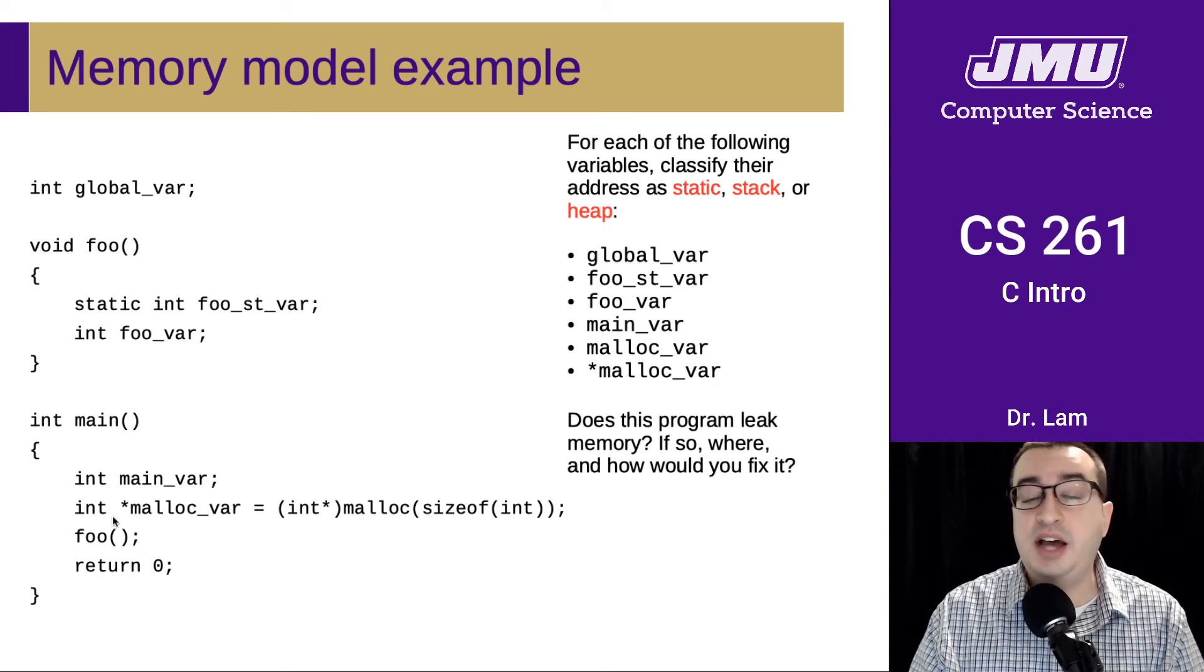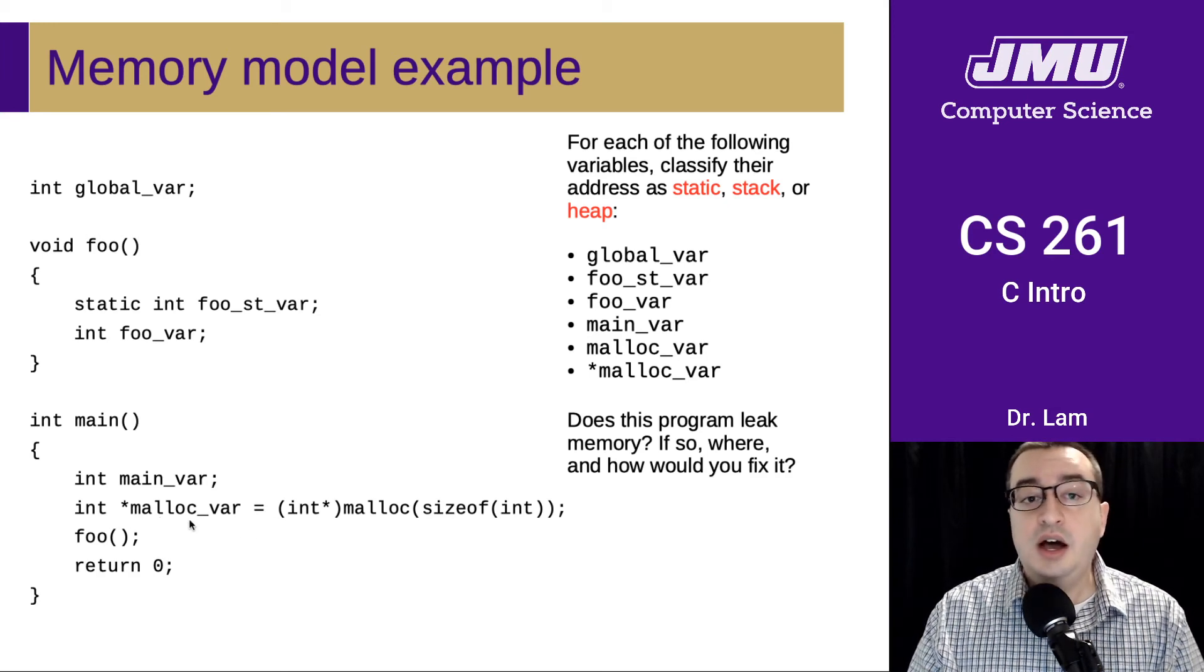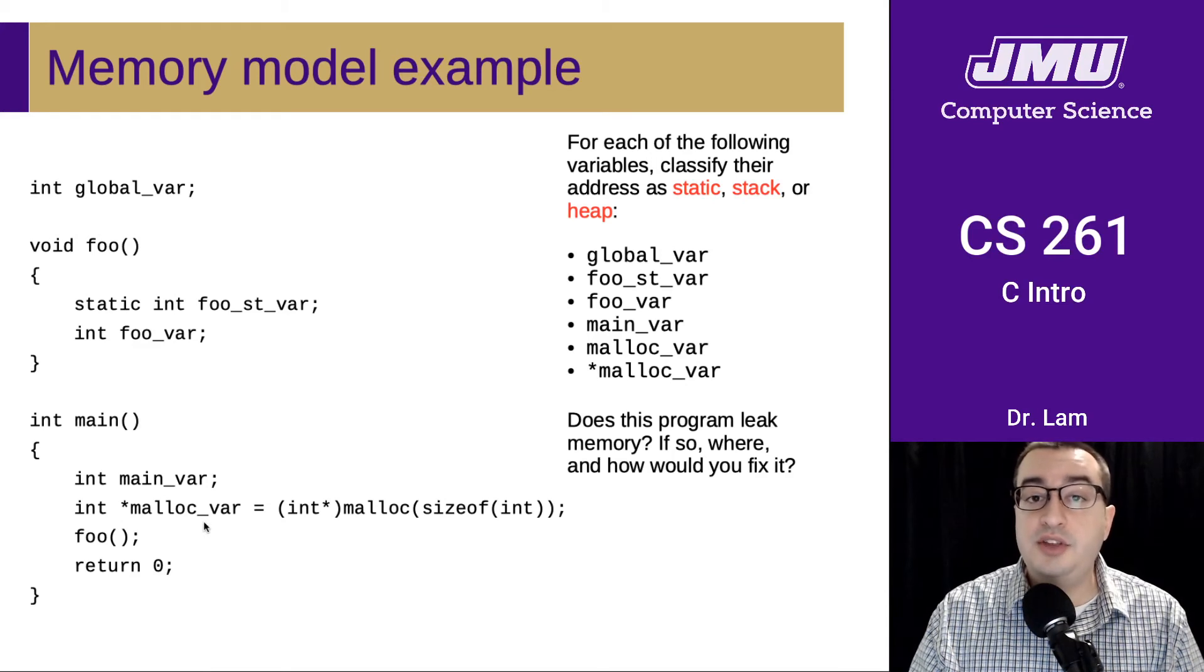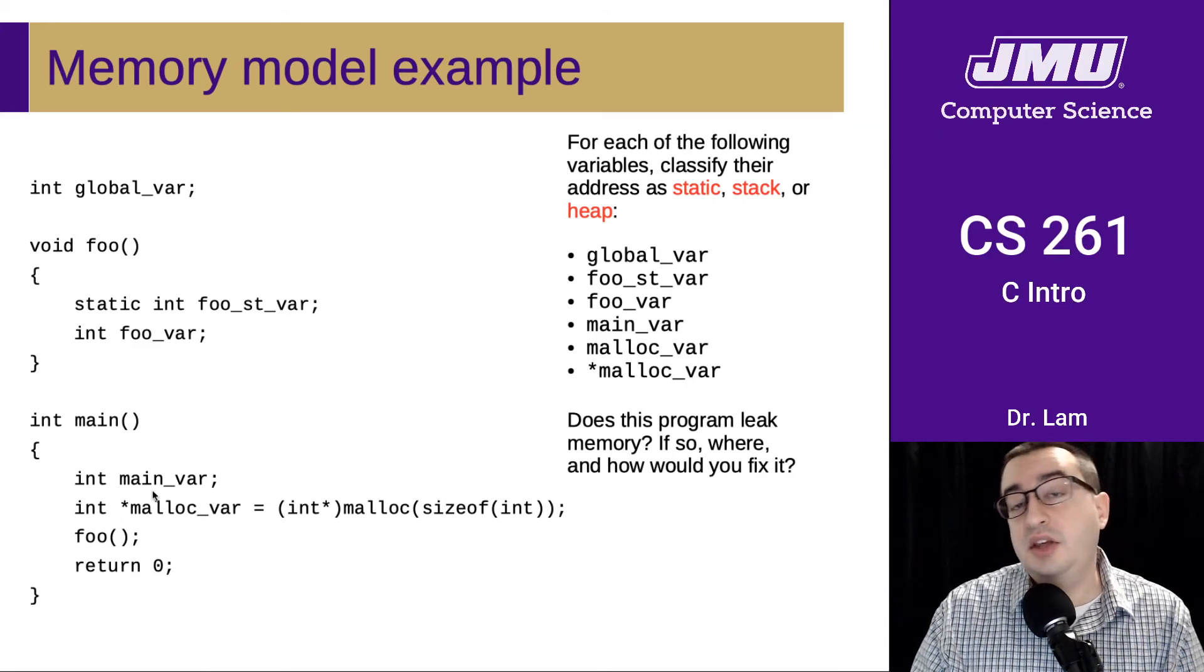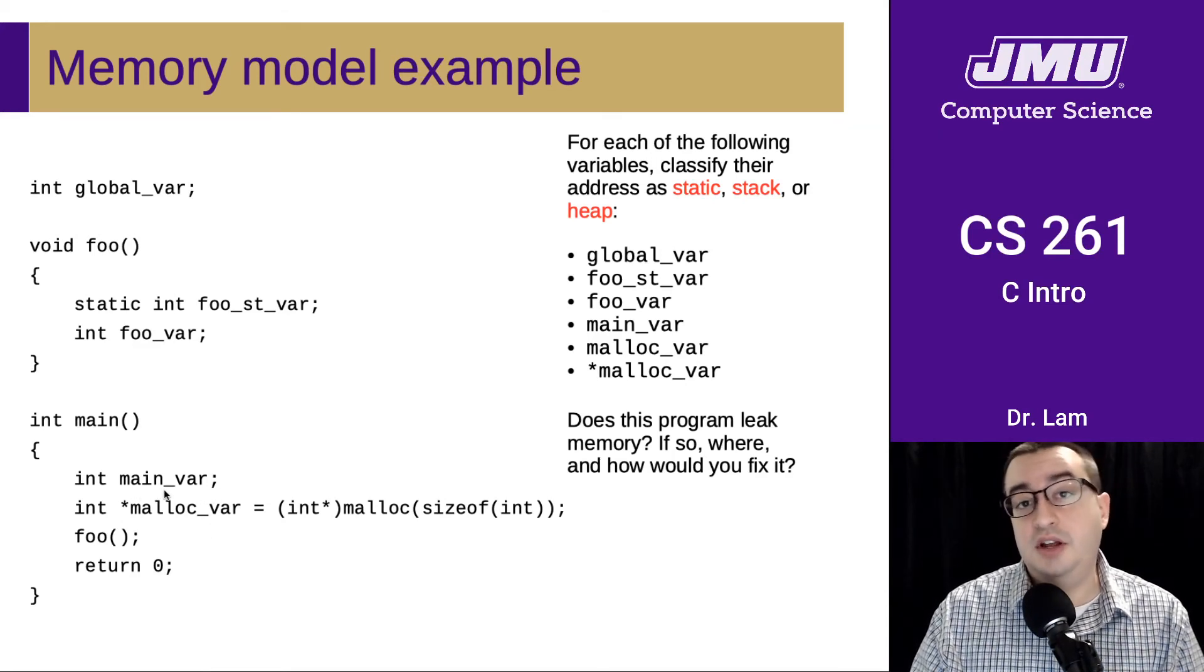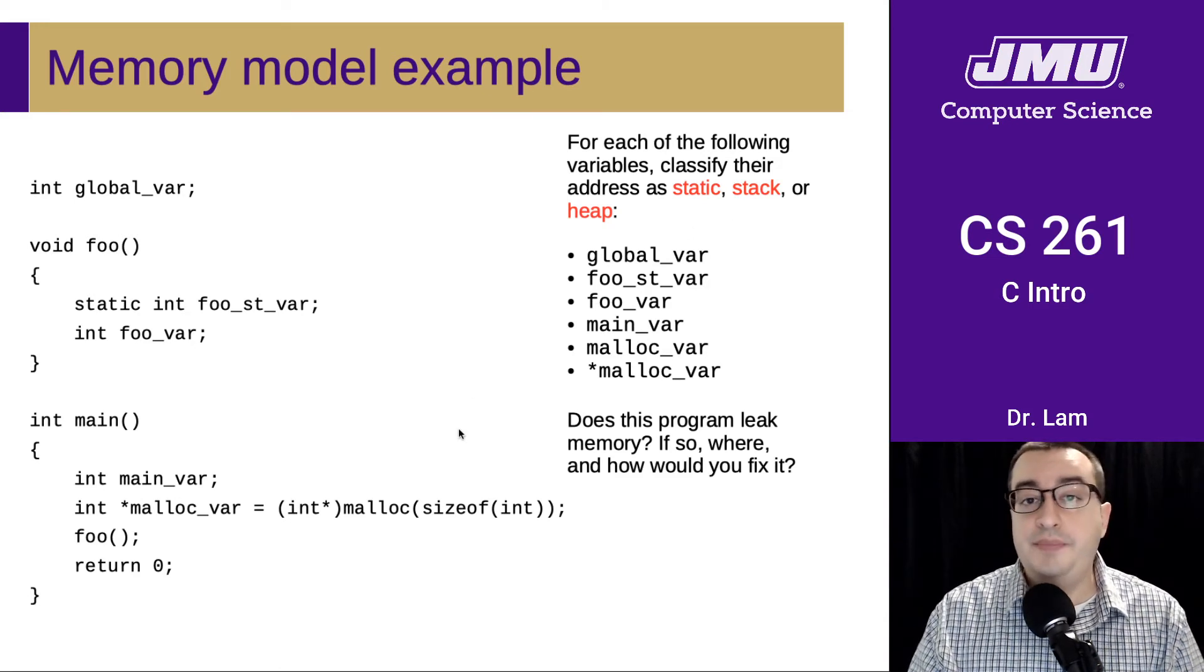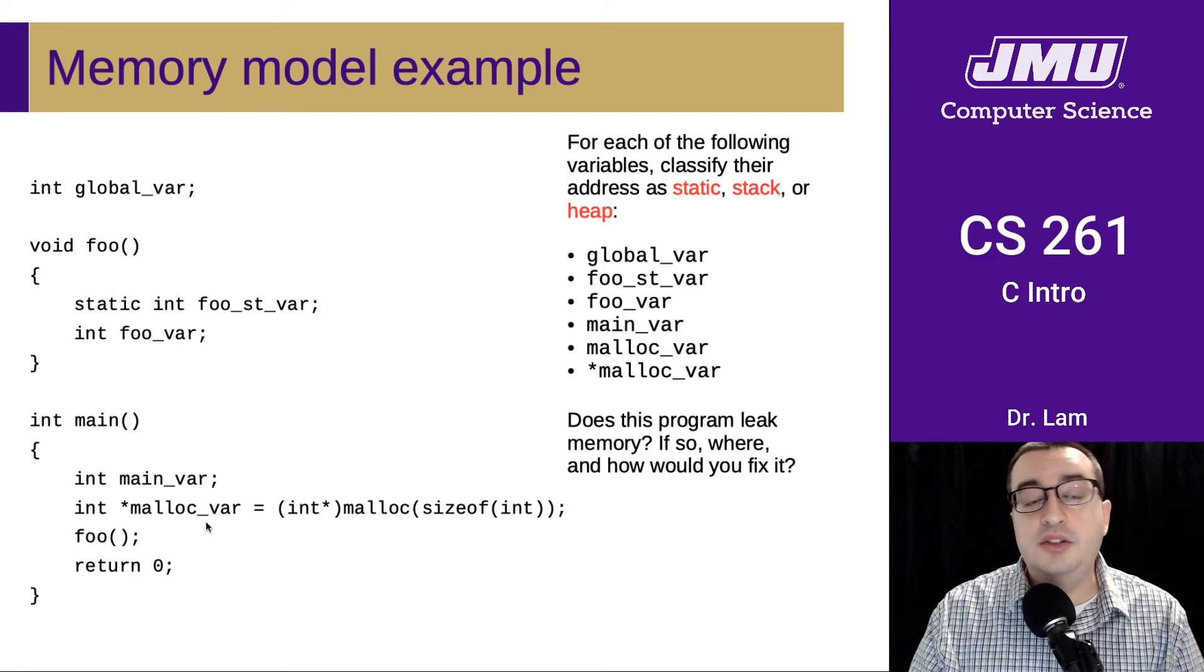So malloc_var has a type. It's an int star. And because it's a local variable inside of main, it is located in the exact same place that main_var is located. So it's going to be located on the stack. And again, it's going to have visibility inside of foo. And it's going to have a lifetime that is only as long as main is running.